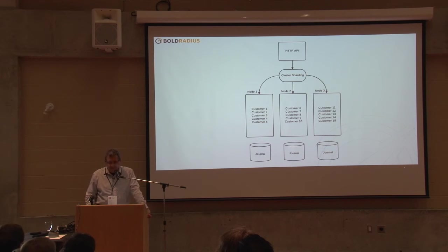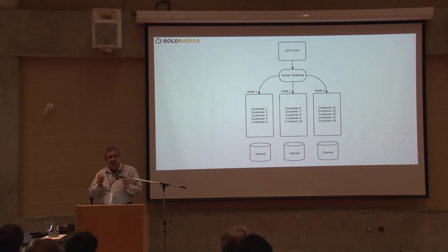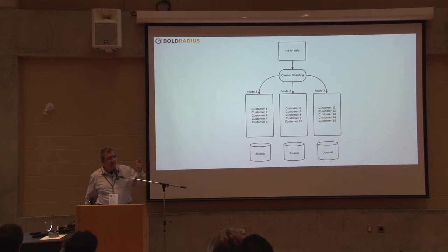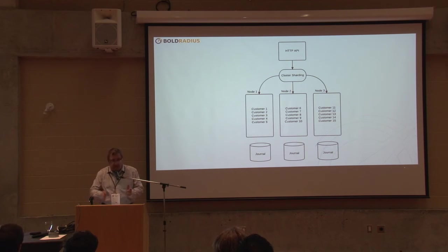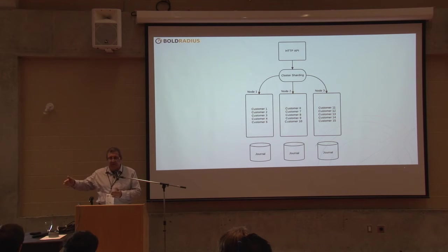Imagine a model where we have our HTTP API and then Akka's cluster sharding capability, which allows us to route messages to appropriate nodes within an Akka cluster based on a shard key — let's say the customer ID. A hash function says every time I hash the customer ID, it results in a cluster identifier, so one shard manages entries for customer one, a different shard manages entries for customer five, and so on.